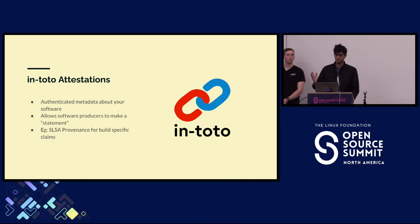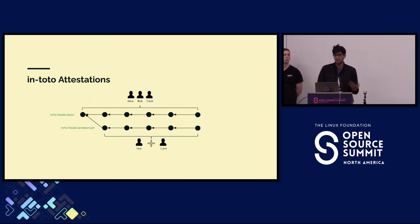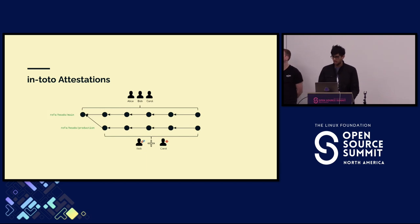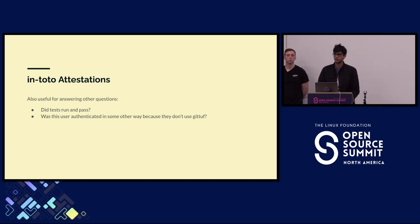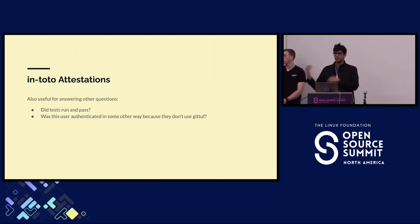An in-toto attestation is an authenticated piece of metadata about your software that allows you to make certain claims about different attributes of that artifact. In the past week you've probably heard this in context of build provenance and other things. We use it for a lot of the multi-party authorization aspects of GitTuff, because while a Git commit can be signed, it can only be signed meaningfully by a single person. So to record additional authorizations, we use attestations. Attestations are also super useful for a tight coupling between source repositories and CI-based workflows — to close the loop about whether CI picked up a change and ran tests.